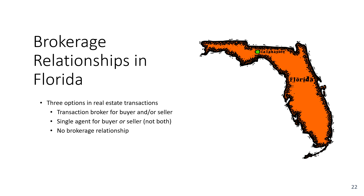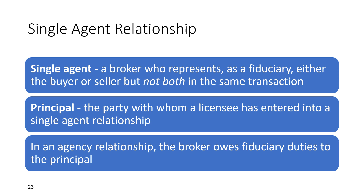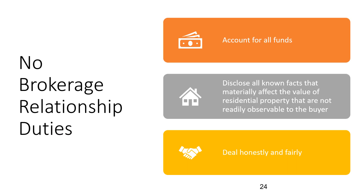There are three brokerage relationships available in Florida: transaction broker, where you can work for the buyer, the seller, or both; single agent, where you work for the buyer or the seller but not both; and the no brokerage relationship. A single agent is defined as a broker who represents as a fiduciary either the buyer or the seller, but not both in the same transaction. The principal is the party with whom a licensee has entered into a single agent relationship. The duties for a no brokerage relationship can be remembered by the acronym ADD: account for all funds, disclose all known material facts that affect the value of residential property that are not readily observable to the buyer, and deal honestly and fairly.